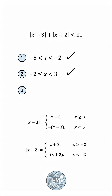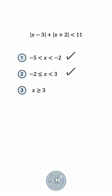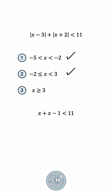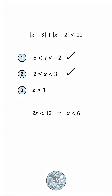Finally, if x is greater than or equal to 3, then both quantities would be the positive version of themselves, and this works out to be 2x is less than 12, or x is less than 6. Again, less than 6 and greater than 3 means it should lie between the two numbers.